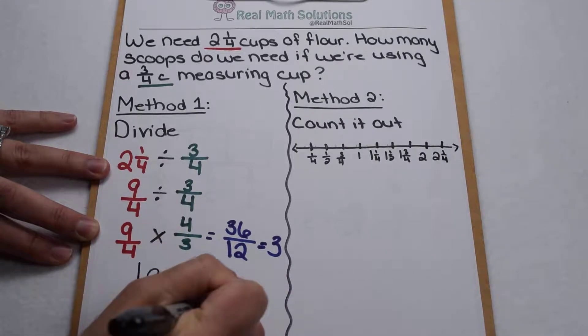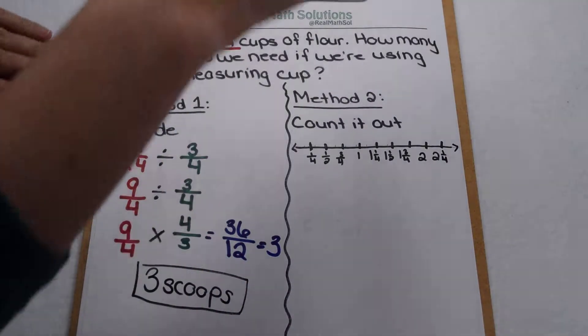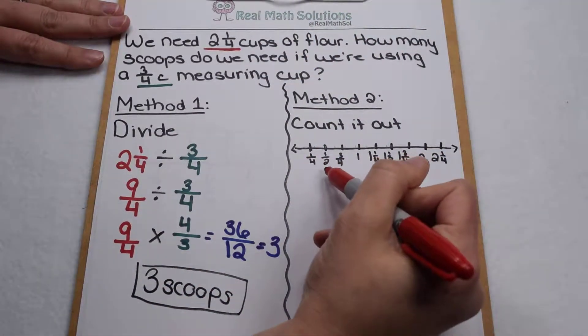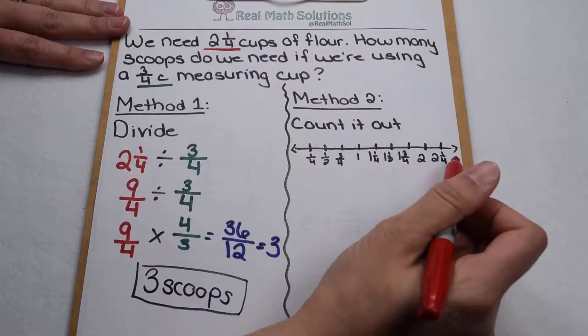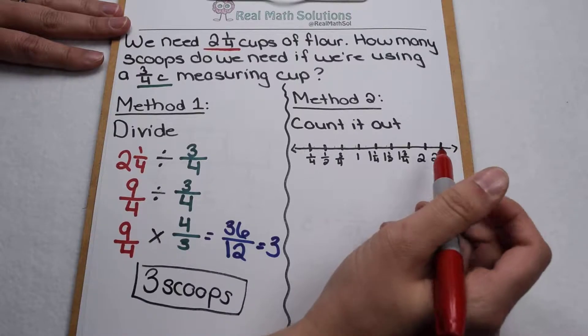So that's one way we can solve it, is by dividing it out. Our other option is to divide everything up into fourths on a number line and count it out in three quarter scoops increments.